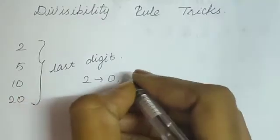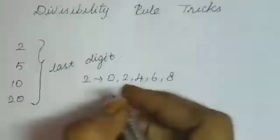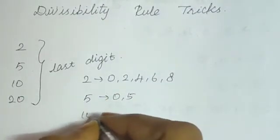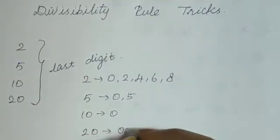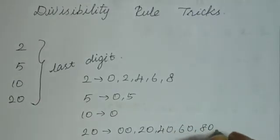For 2, the number should end with 0, 2, 4, 6, or 8. For 5, it should end with 0 or 5. For 10, it should end with 0. And for 20, the last number should be 00, 20, 40, 60, or 80.